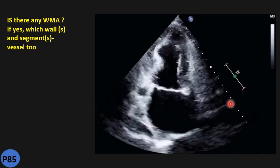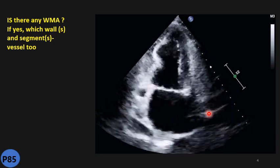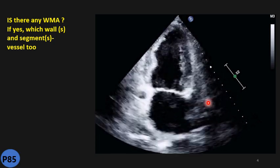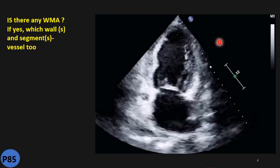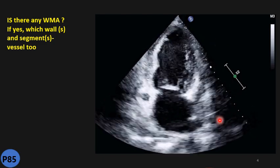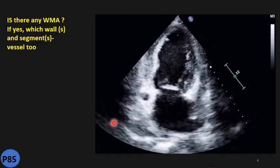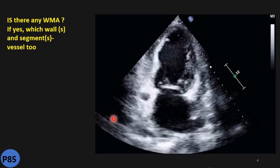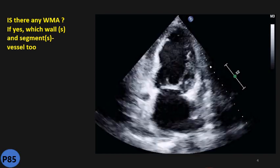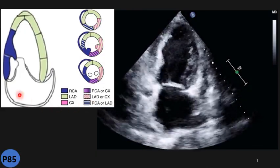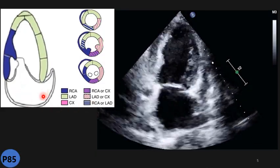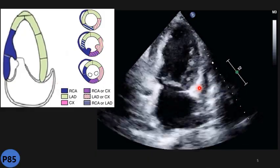Beside the wall motion, can you appreciate another anatomic structure on this view? The view is apical 2-chamber. Besides the LA, mitral valve, and LV, do you see another normal structure here? Take 30 seconds, then let's see.